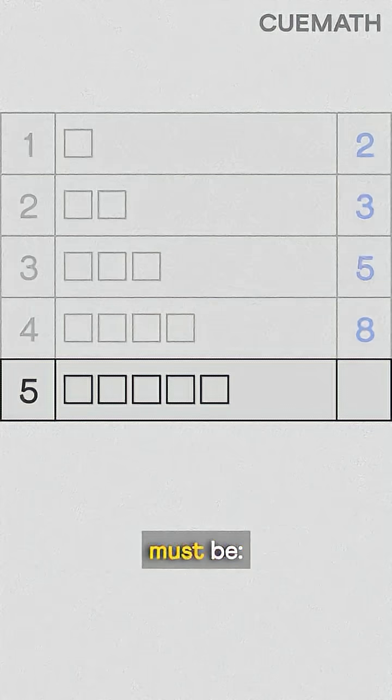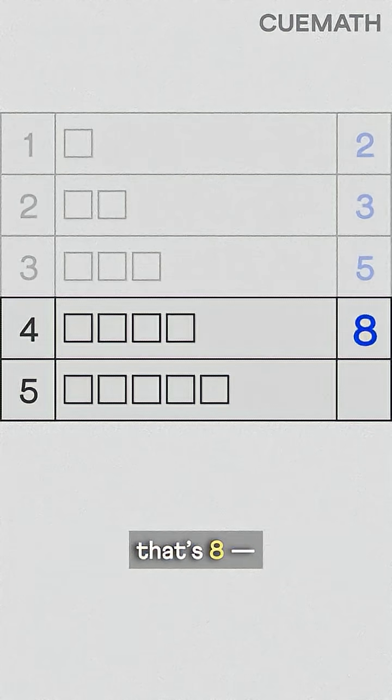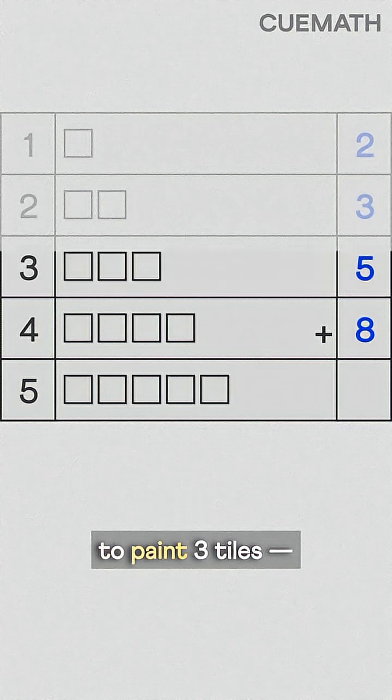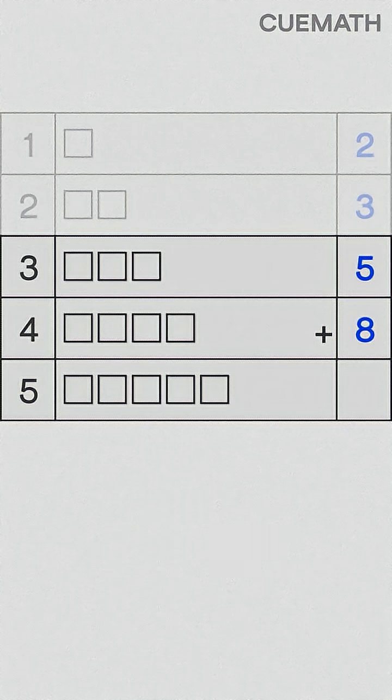So for five tiles, the total ways to paint must be the ways to paint four tiles, that's eight, plus the ways to paint three tiles, that's five, which gives thirteen.